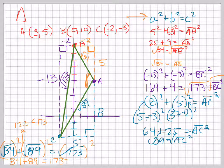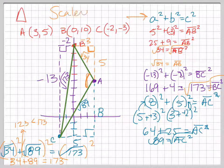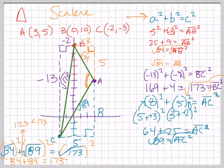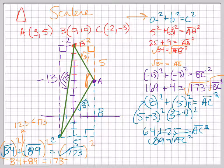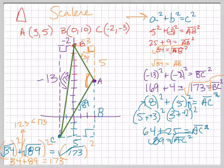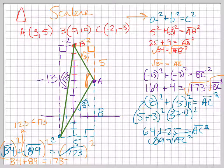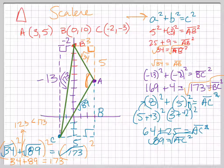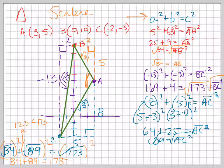So notice how all three of them gave us three unique numbers, meaning this would be a scalene triangle. If all of them were the same number, it would be equilateral, because everyone's the same. If two of them were the same, that's called isosceles. And if none of them are the same, it's called scalene. So that is how you classify a triangle using the distance formula in a coordinate plane.